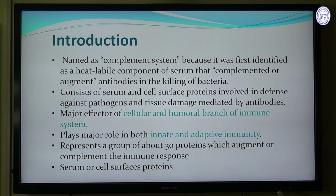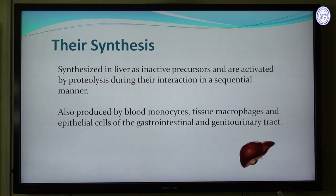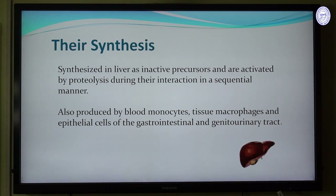Heat labile means as we heat the component it will break down. The complement system consists of different types of proteins — serum and cell surface proteins — involved in the defense against pathogens and tissue damage mediated by antibodies. The major effectors of complement are the cellular and humoral branches of the immune system, and they play a major role in both innate and adaptive immunity. There are about 30 proteins which are part of this complement system.